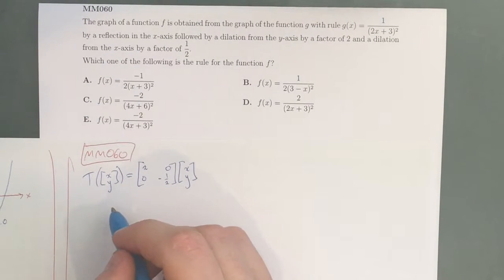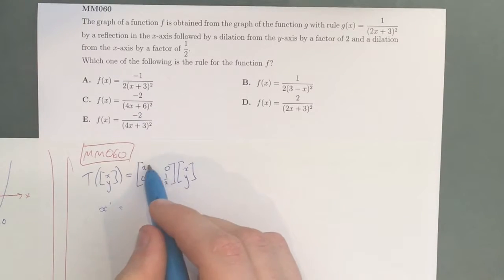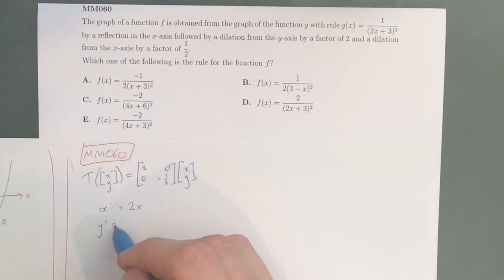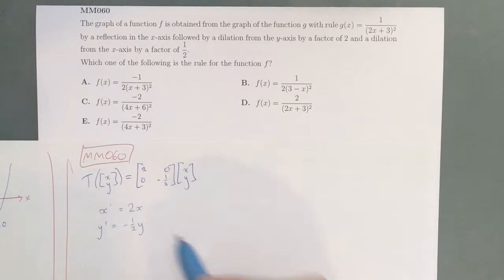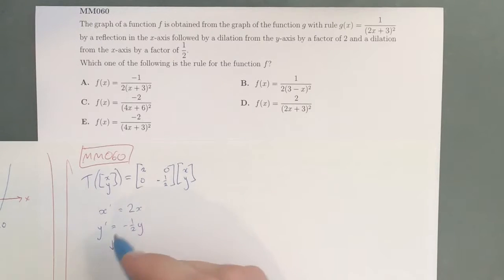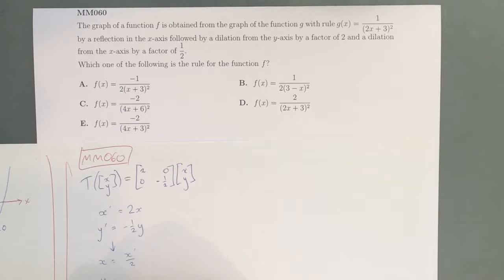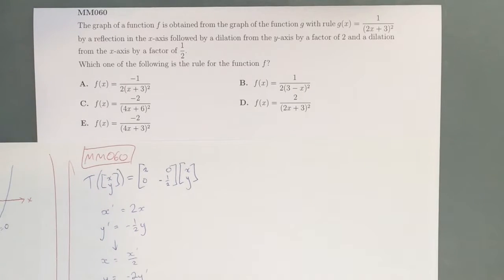Now all we do here is expand this out, so on this side we have x' = 2x and y' = -1/2 y. Now we just need to rearrange for x and y, which means we get x = x'/2 and y = -2y'.